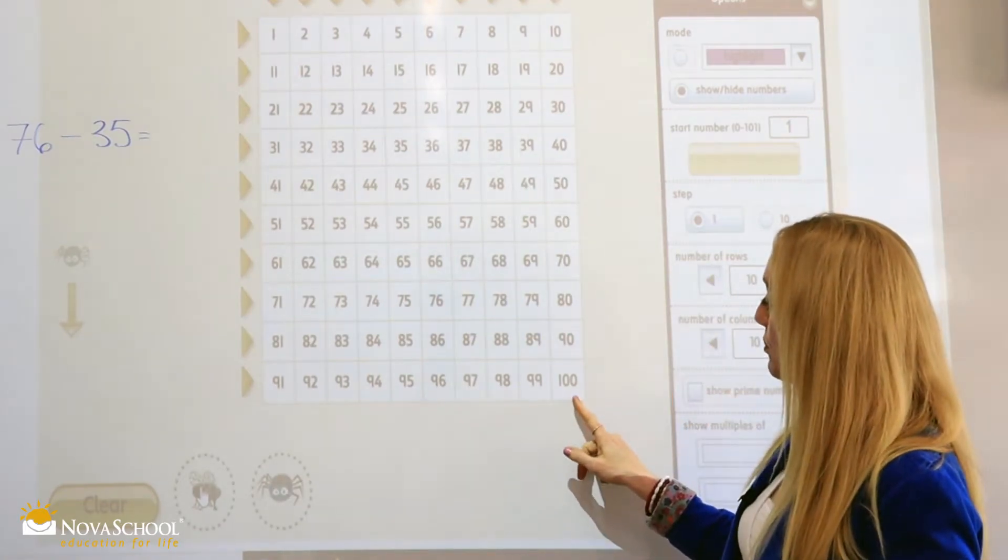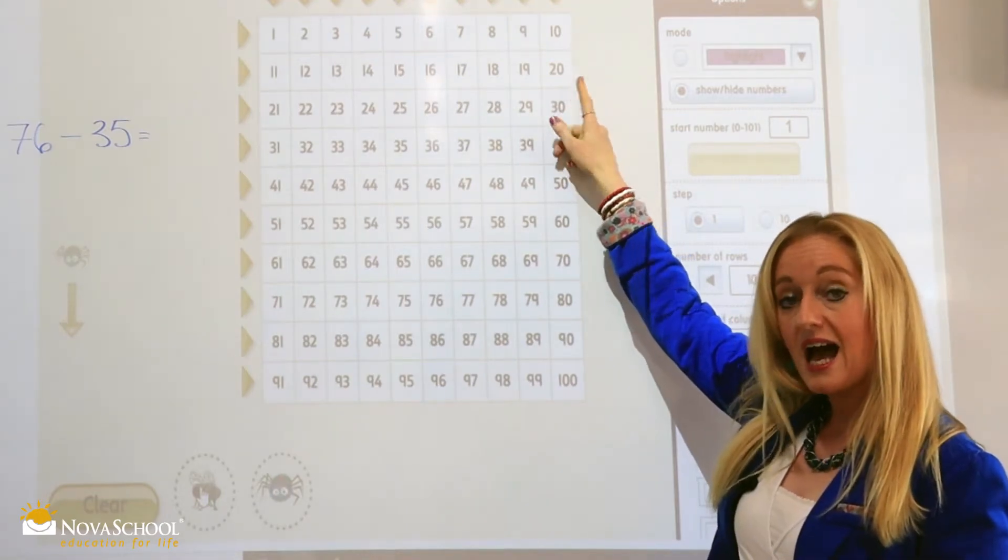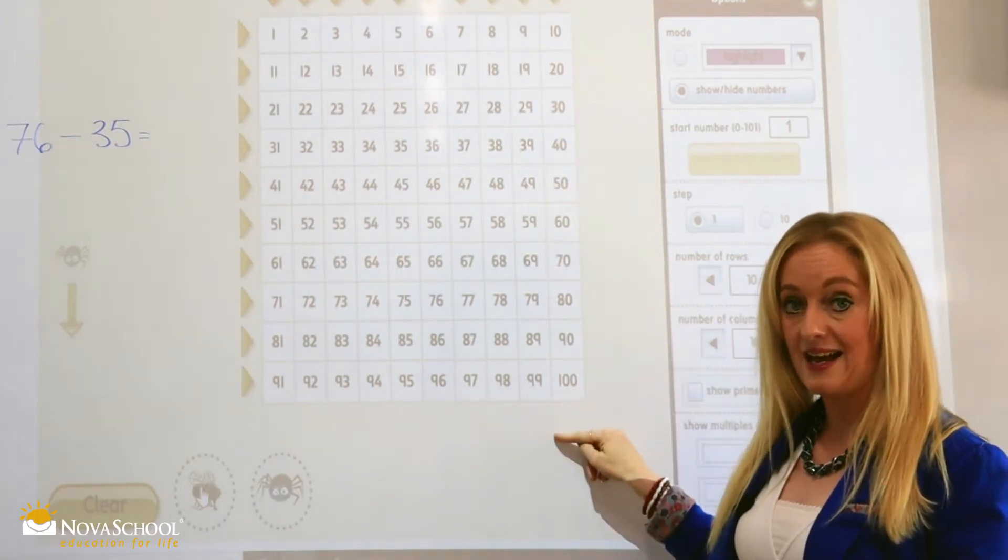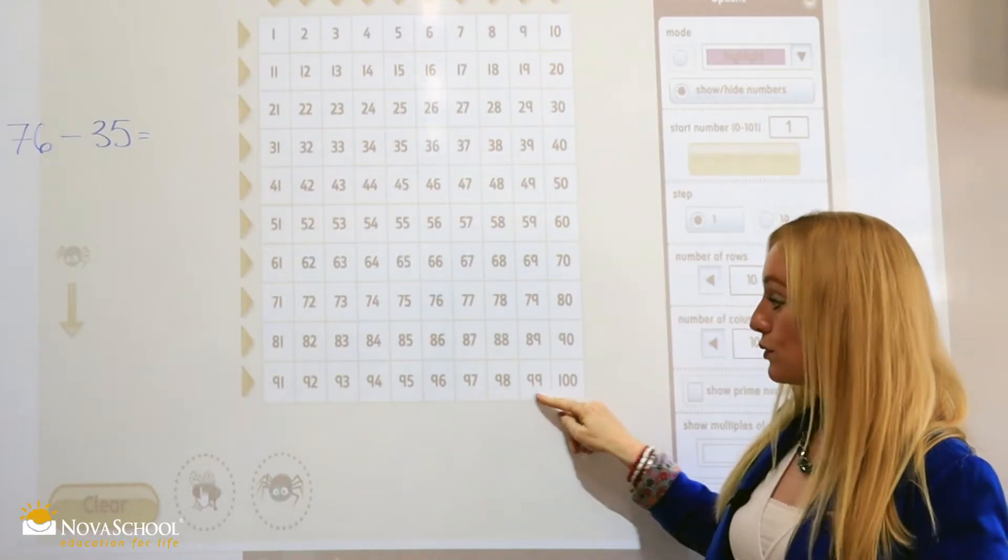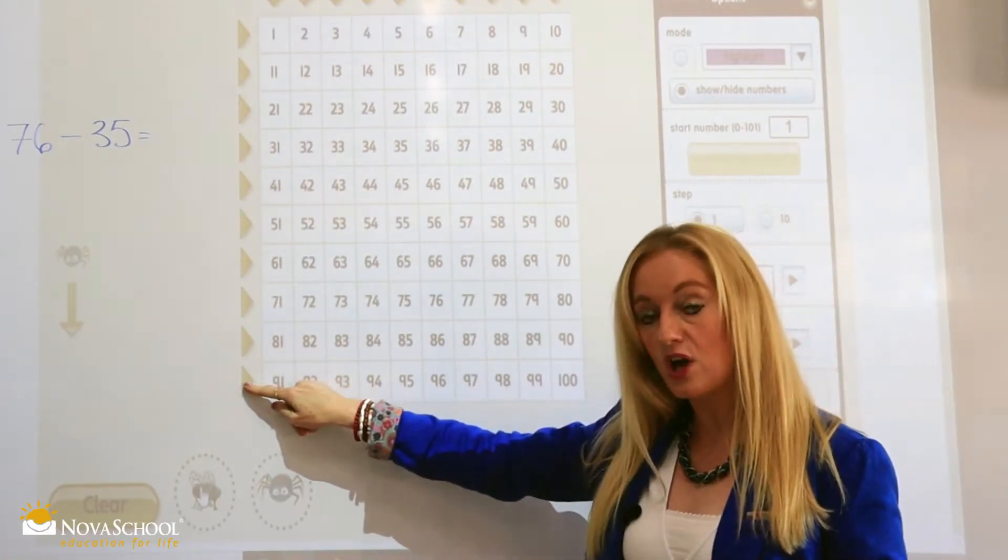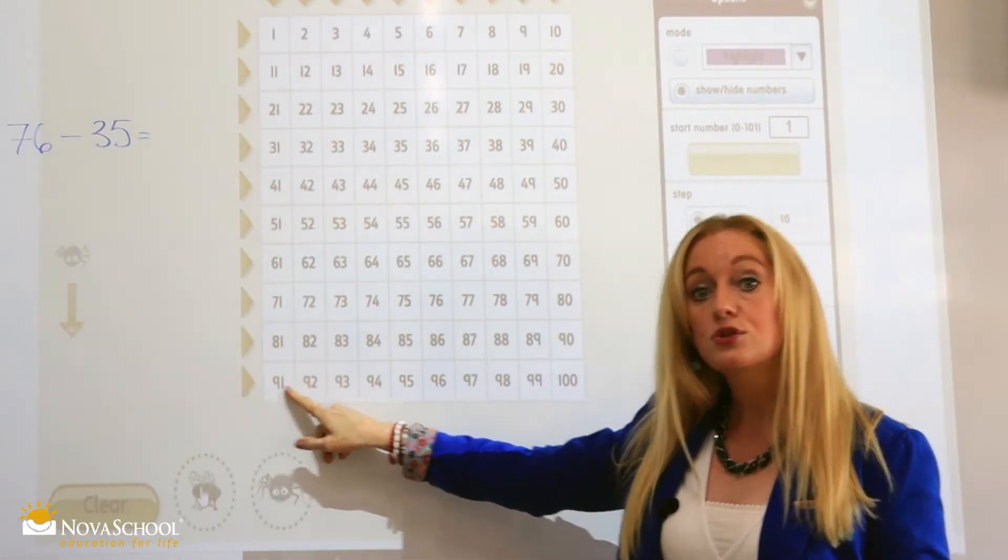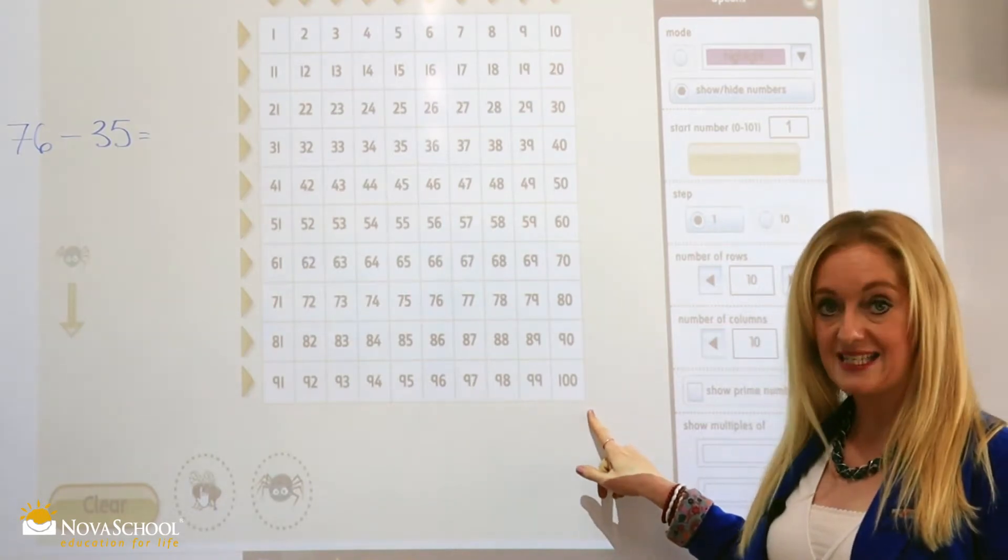So we go the number we are taking away by going up and we are adding going down, okay? Across this way to the left we are taking away, to the right we are adding, okay?